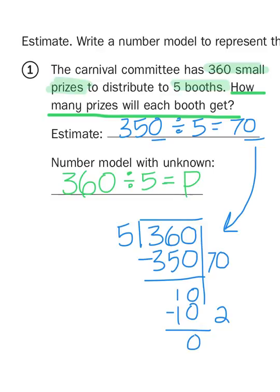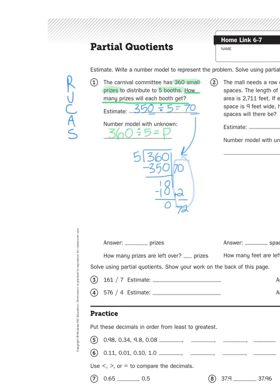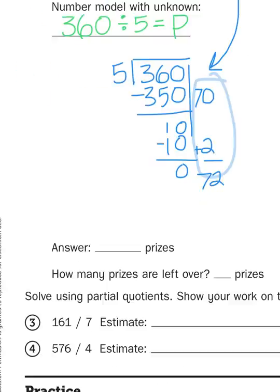and I'm left with nothing, I now have to look at my partial quotients, which are right here, 70 and 2. And of course, 70 and 2 is going to give me an answer of 72. So that is my answer, 72 prizes.